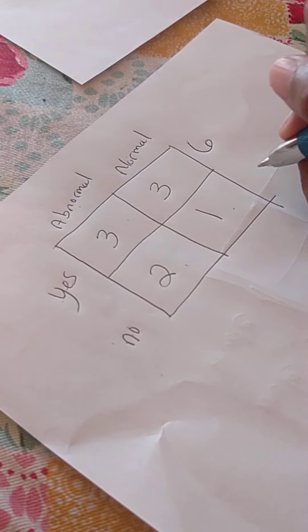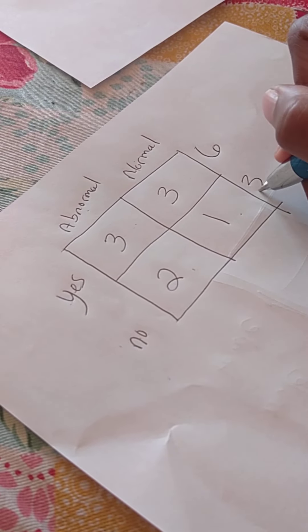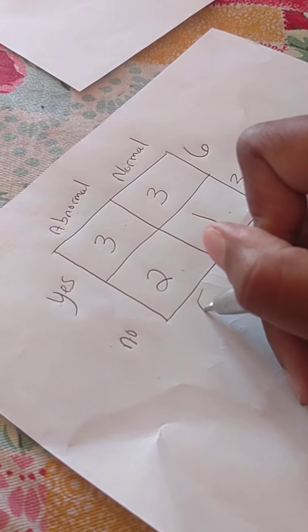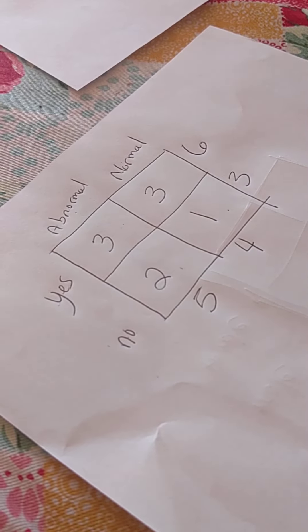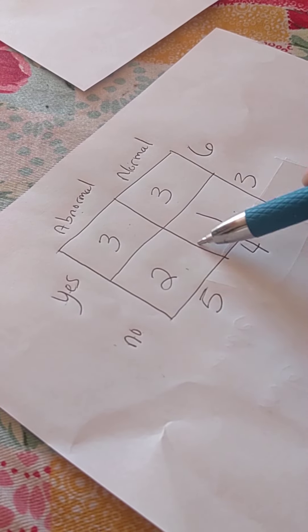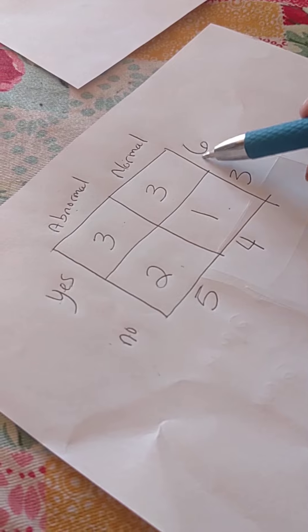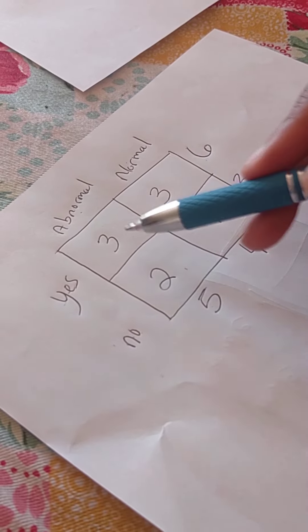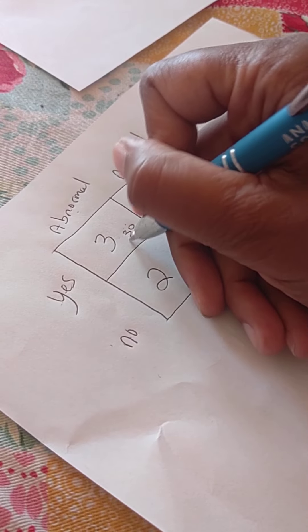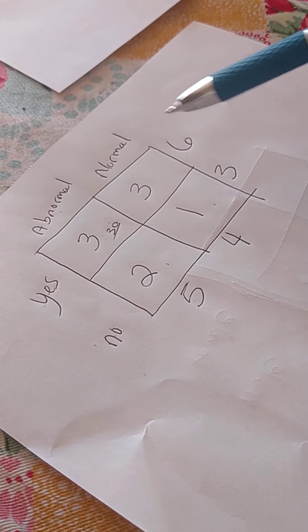Let's put these totals in for the rows and for the columns. So, how do you calculate the expected value for each one of these cells? You're going to go row total times column total for the cell, which would be 30 over, how many are in here?